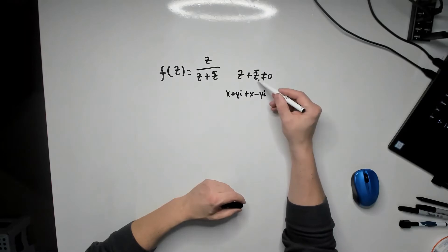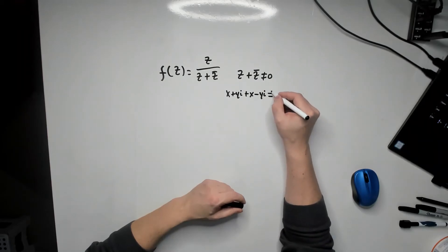Remember the z bar there, the conjugate, has the middle sign between x and y negative. And this cannot be equal to 0.